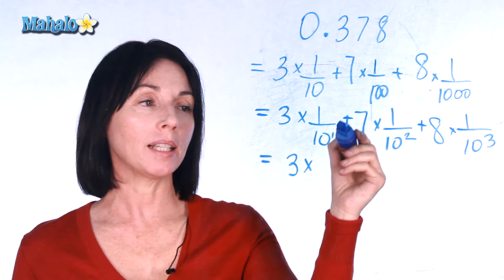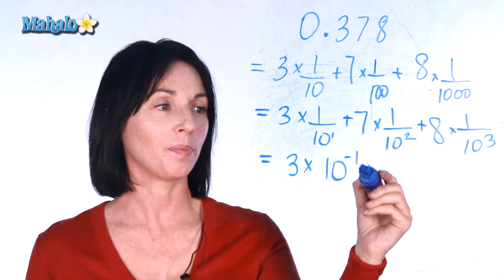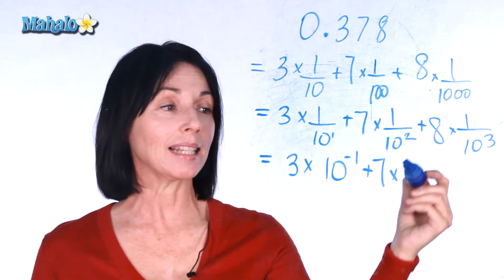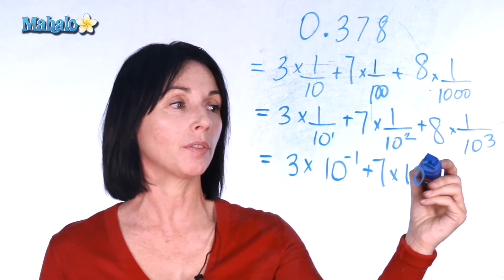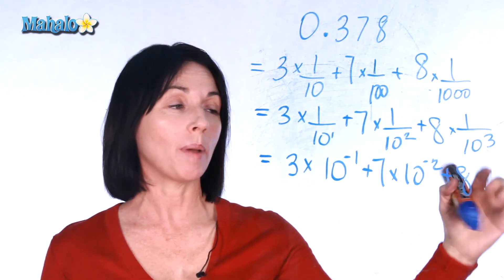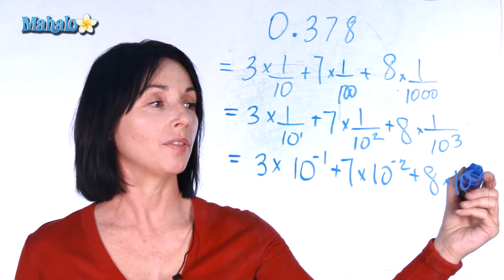One tenth raised to the power of 1 is the same as 10 raised to the power of negative 1. One over 10 squared is the same as 10 to the power of negative 2. And 1 over 10 to the power of 3 is the same as 10 to the power of negative 3.